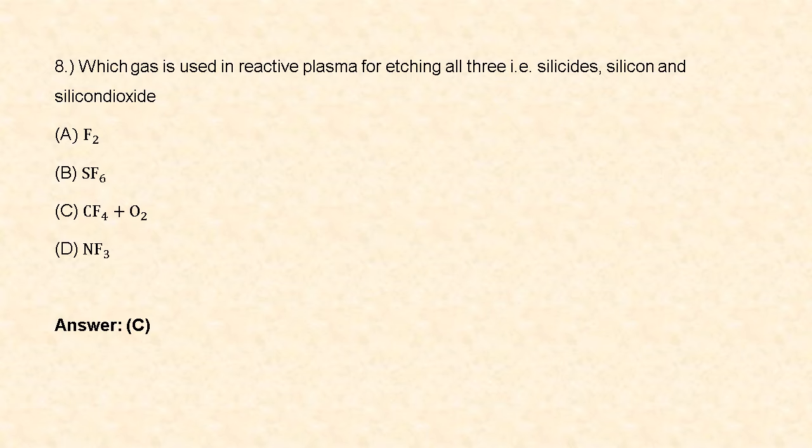Next question: which gas is used in reactive plasma for etching oxides? Option A: Carbon tetrafluoride. Option B: Laser fluoride. Option C: Carbon tetrafluoride plus oxygen. Option D: Nitrogen trifluoride. Carbon tetrafluoride plus oxygen combination gas is used in reactive plasma for etching these oxides. So answer C is correct.